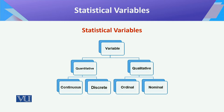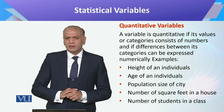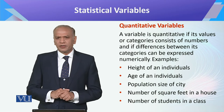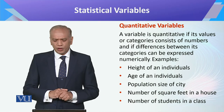Then further classification, as you can see, there are continuous variables, discrete variables, nominal, and ordinal. In different ways, different types of data available around us are basically different types of variables.